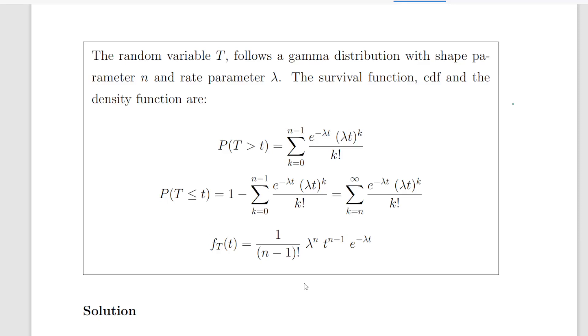This is an important set of definitions with regard to the gamma distribution. The random variable T follows a gamma distribution with shape parameter n and rate parameter lambda. The survival function, cumulative distribution function, and the density function are given as follows.